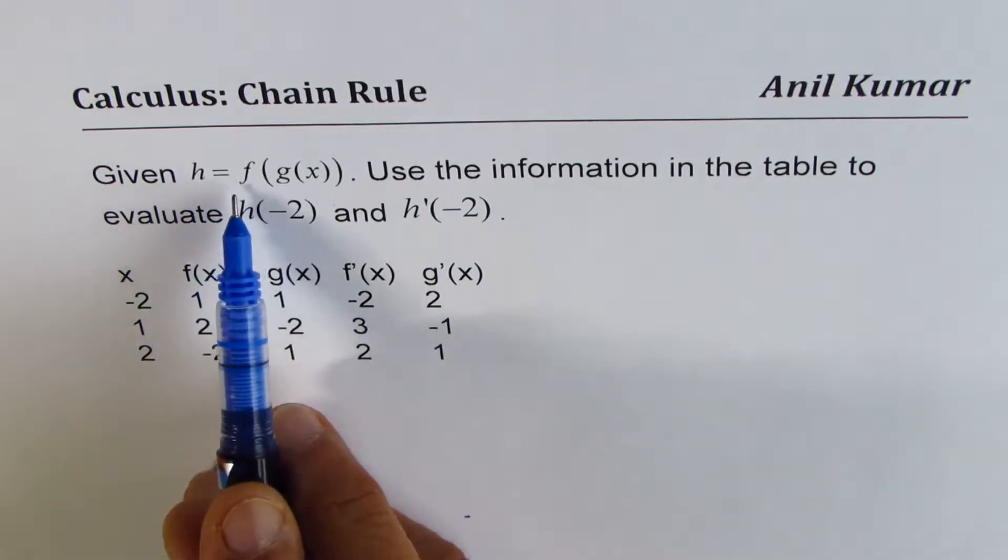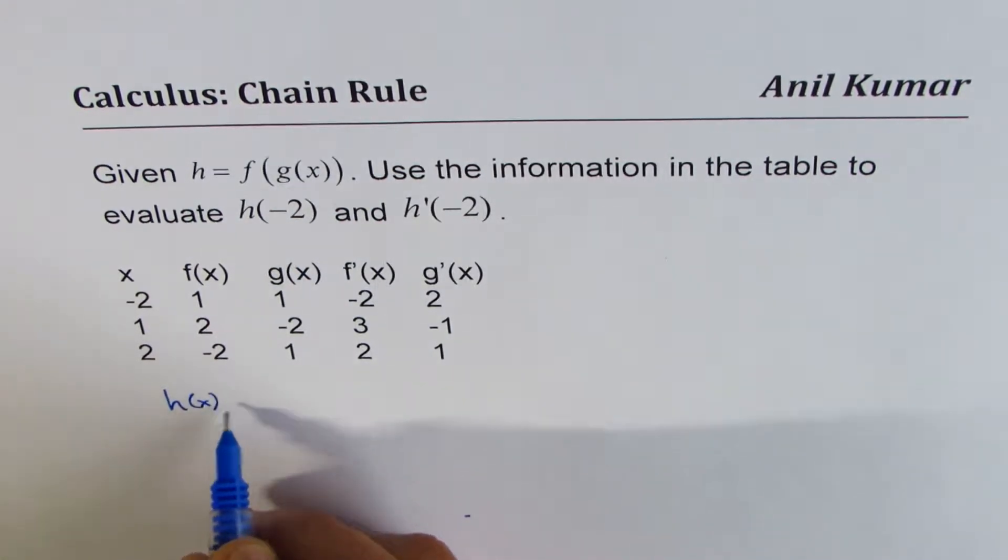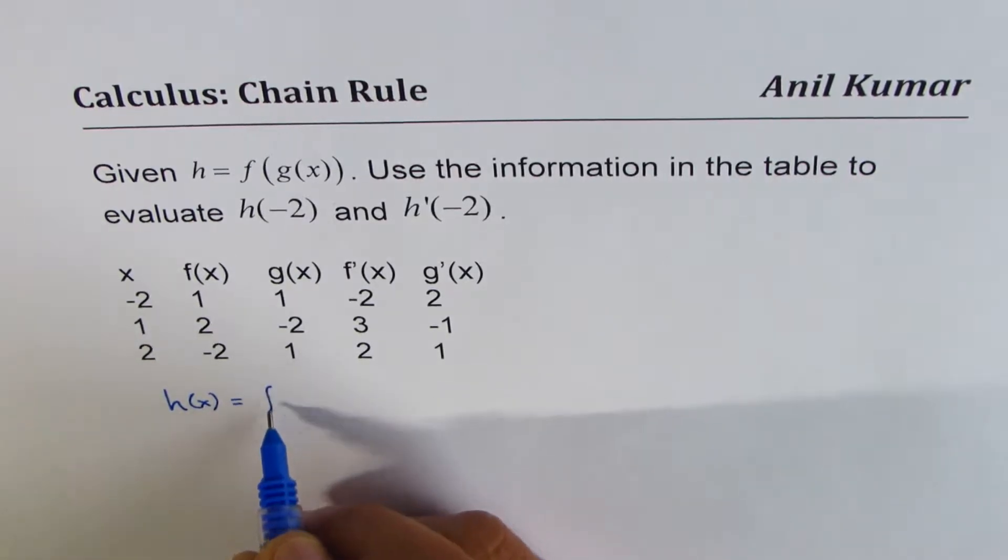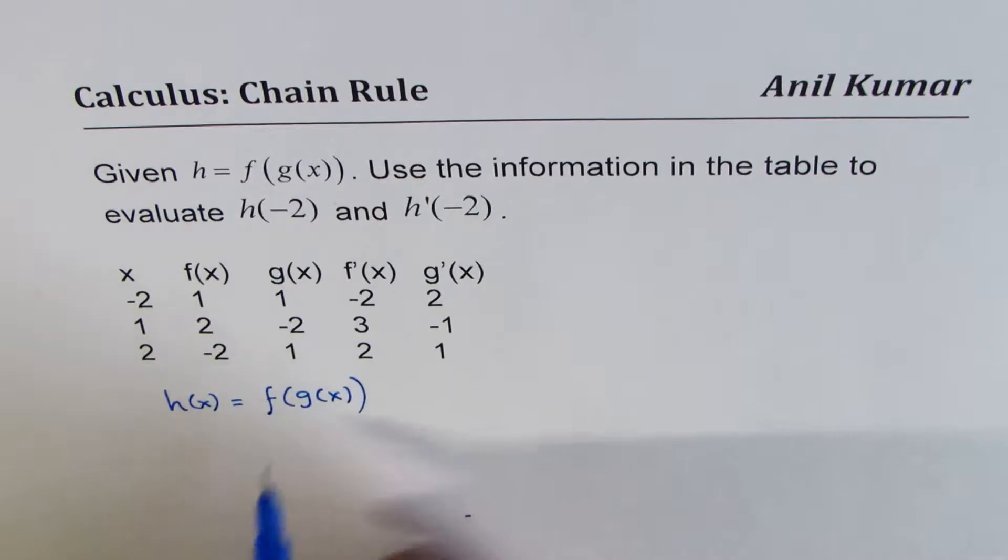h equals f of g of x means that h is a function of, we could write this as h of x equals f of g of x. That is what is given to us.